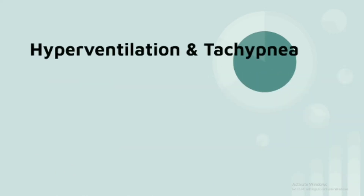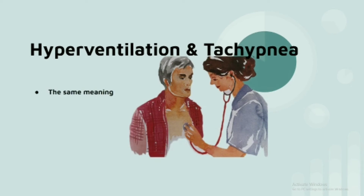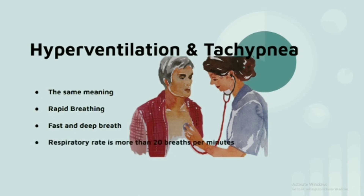And like I said, adults have around 12 to 20 breaths per minute. So hyperventilation and tachypnea are words that have the same meaning — they mean rapid breathing or fast breathing. If you have hyperventilation or tachypnea, you breathe more than 20 breaths per minute, so you have a higher respiratory rate.